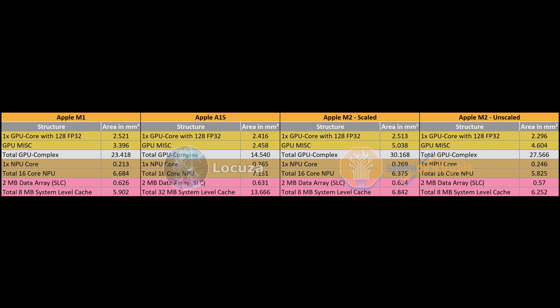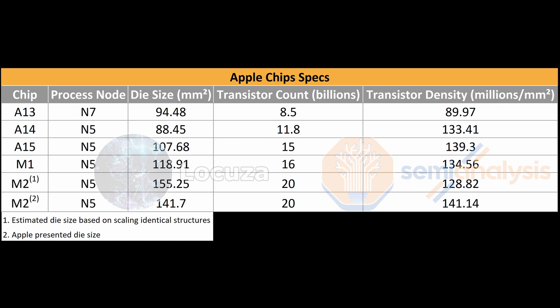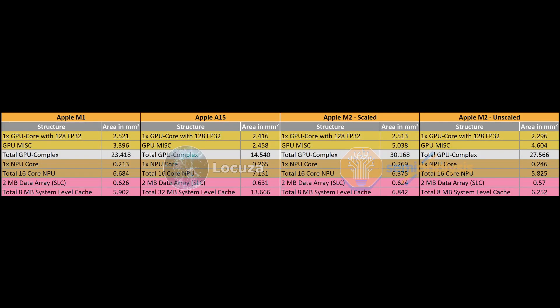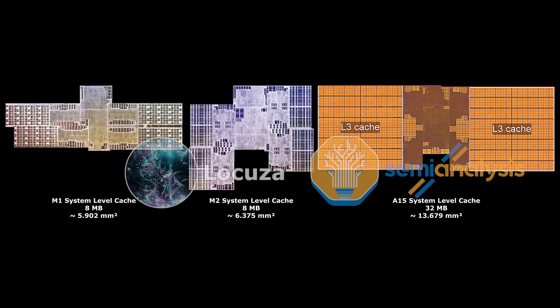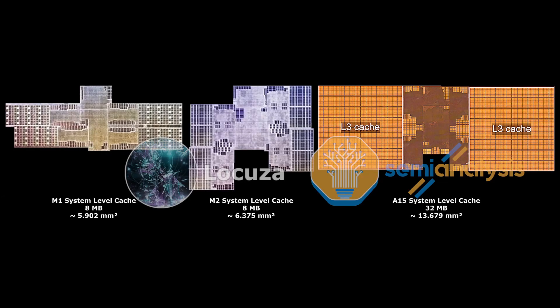We have also included the NPU and SLC figures here. The NPU comes across as a little odd, so we'll skip over those. The SLC, shared level cache, is where things are really interesting. Each two megabyte data array is generally the same size across M1, A15, and the scaled M2 die, which makes sense — there is no SRAM shrink from first generation to second generation N5 process node. Despite this, the SLC does grow somewhat in size on M2, likely because they have more bandwidth to various IP blocks such as the larger GPU and to handle that higher memory speed. The same-size two megabyte arrays are a testament to the scaling being accurate because it should be the same size per two megabytes.